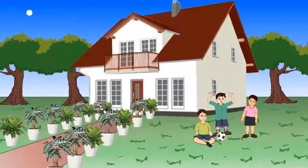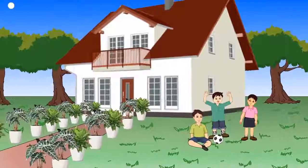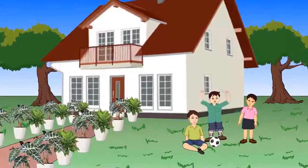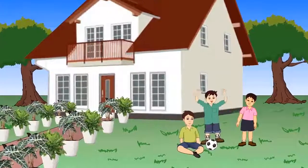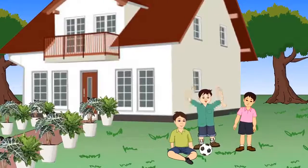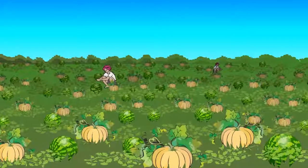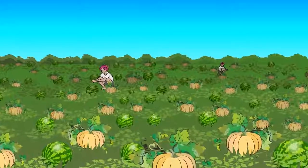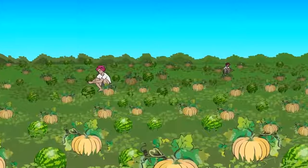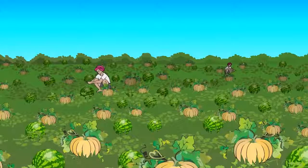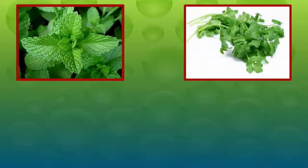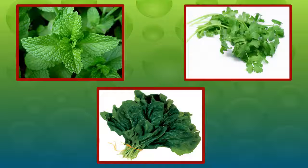Plants are grown in houses and gardens to provide shade, oxygen, and for their beauty. Some plants are grown for their fruits and vegetables. Leaves of mint, coriander, and spinach are used in food preparation.